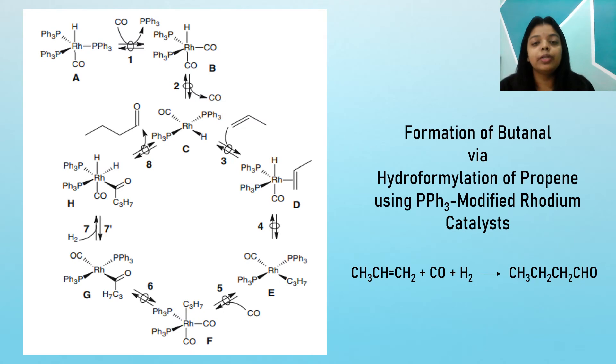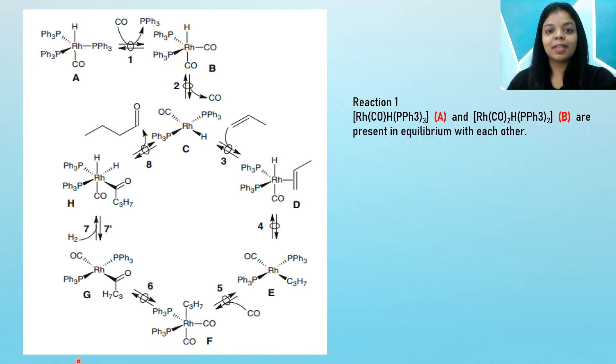So today I am going to talk about the formation of butanal via hydroformylation of propene using triphenylphosphine-modified rhodium catalyst. This is the cyclic mechanism for the hydroformylation of propene.